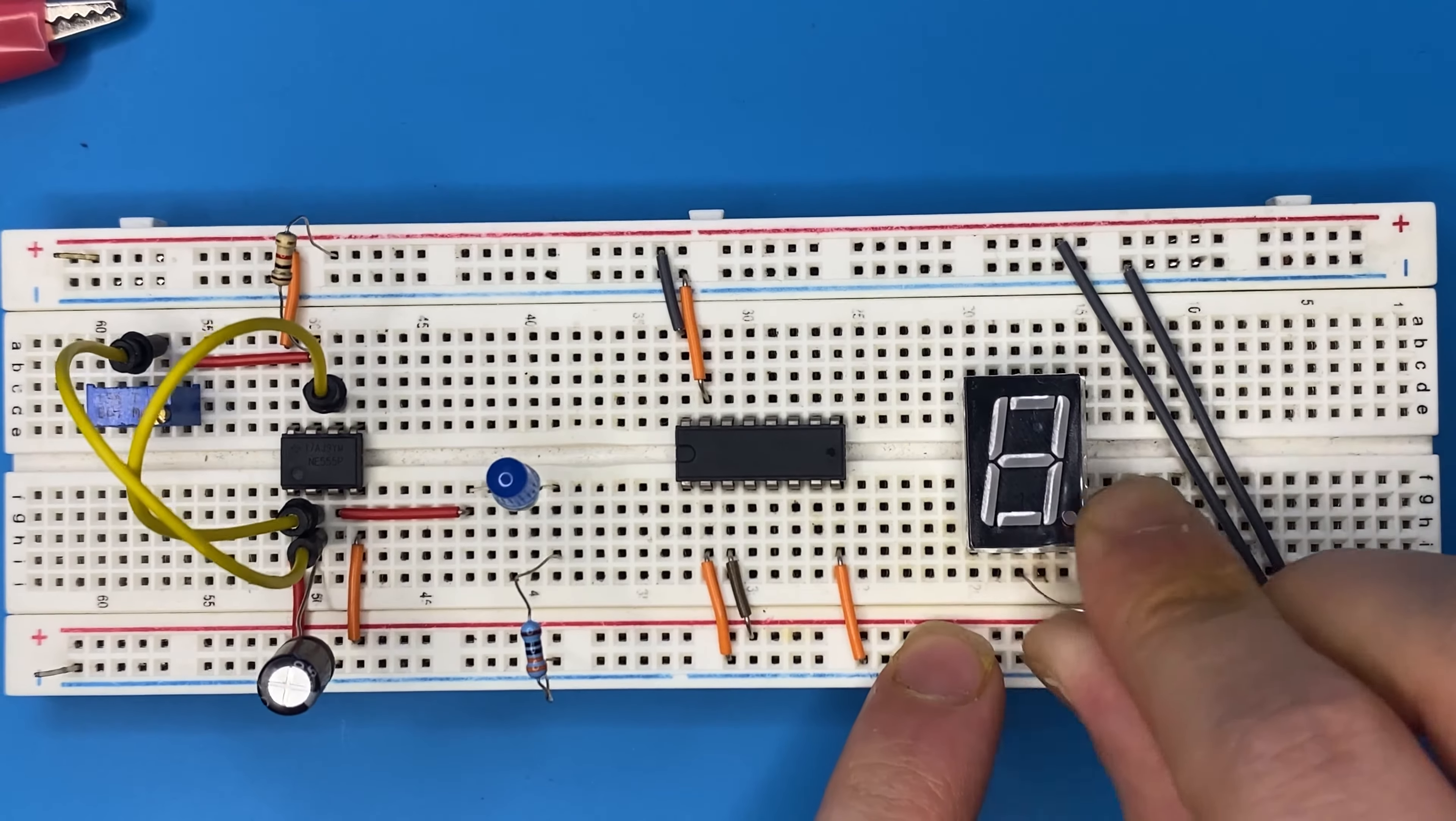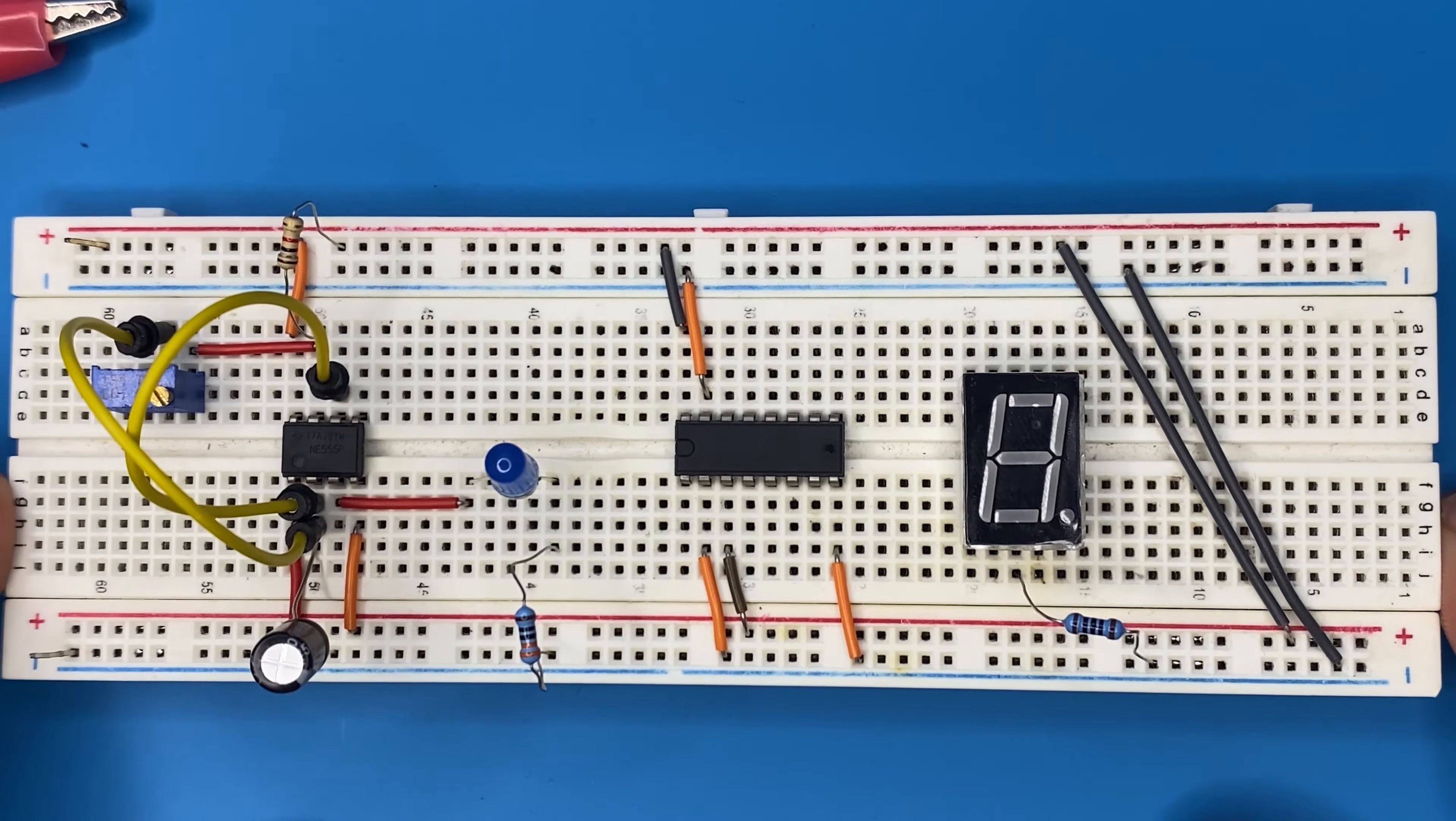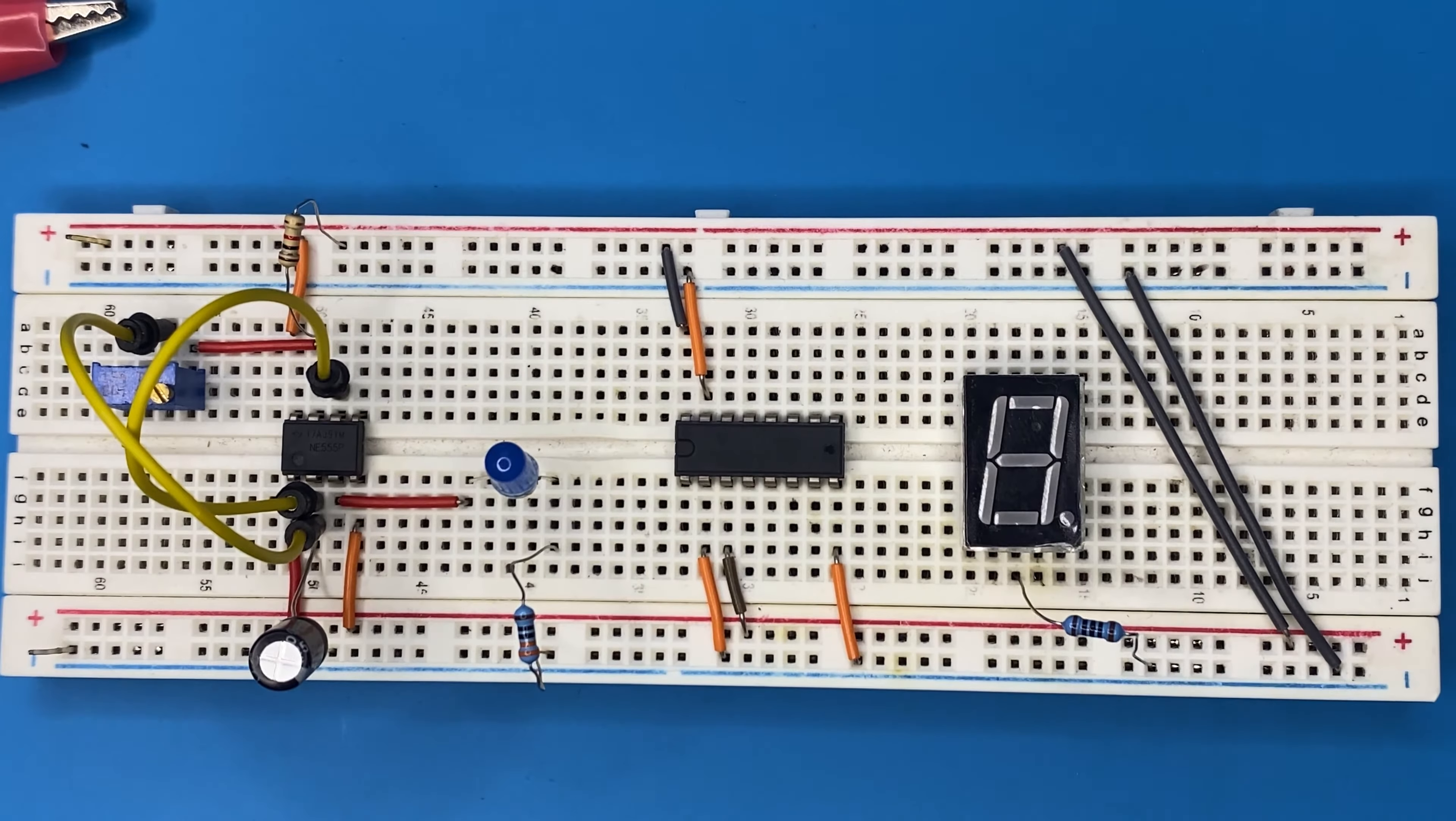Connect the 330 ohm resistor to the common cathode pin of the display and to ground. And now let's connect the IC to the 7-segment display.